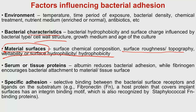Serum or tissue proteins also play a role: coating a biomaterial with albumin typically reduces bacterial adhesion, whereas coating with fibrinogen encourages bacterial attachment to material surfaces. Not all proteins have repelling properties toward bacterial adhesion — in fact, some proteins can encourage more bacterial attachment, which should be avoided. Additionally, specific adhesion through selective binding between bacterial surface receptors and host ligands such as fibronectin covering implant surfaces is also important.